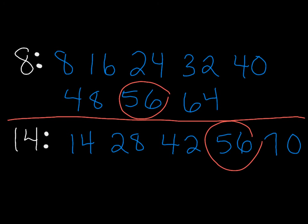Since 56 is the smallest number that 8 and 14 both have as multiples, then it is their least common multiple.